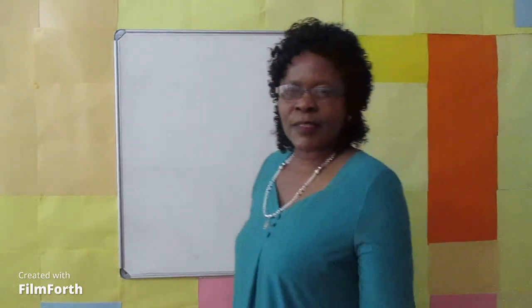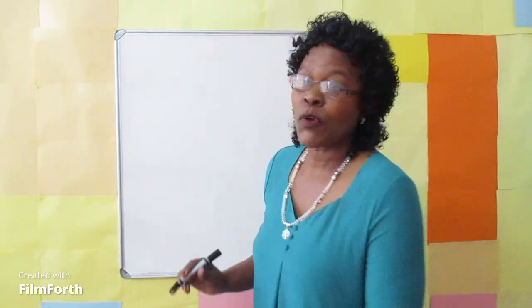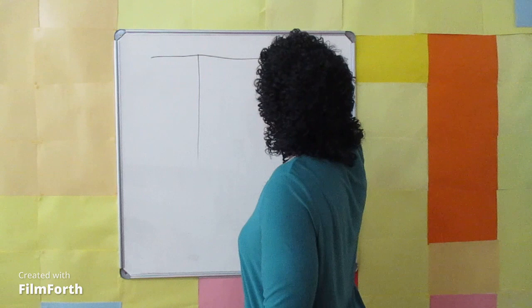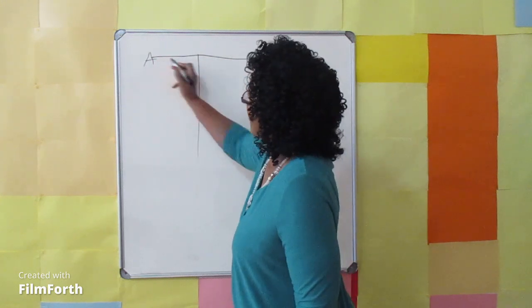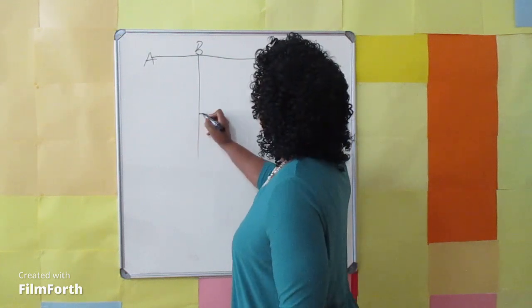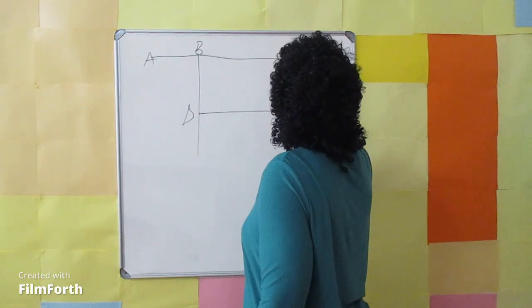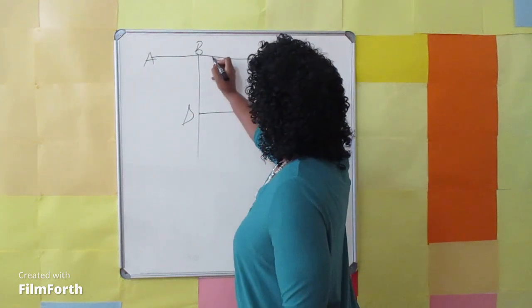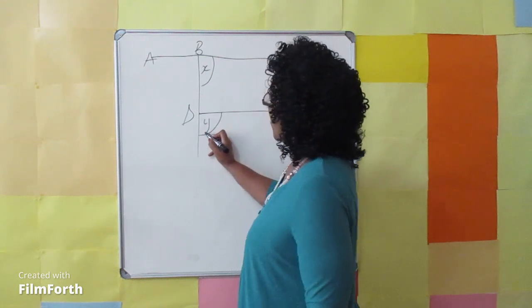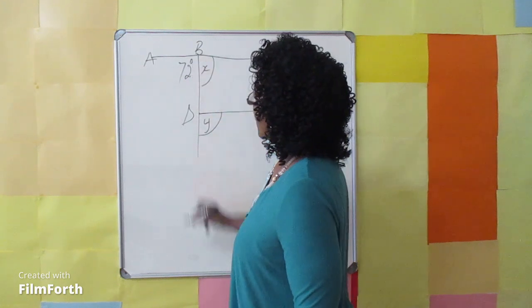In the following diagram, let's determine the value of X. I am going to draw the diagram. This is A, B, C line. This is D, E line. This is angle X. This is angle Y. This is 72 degrees.